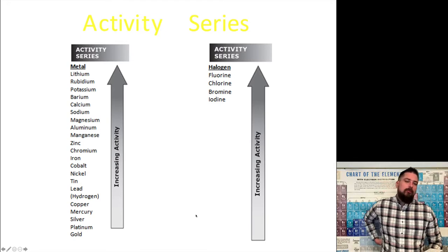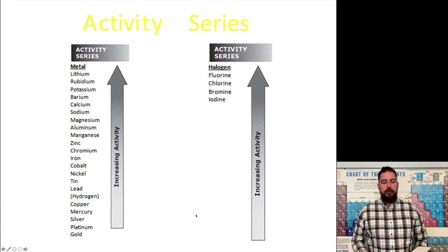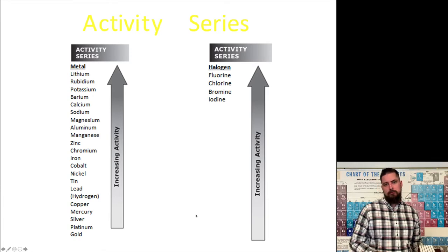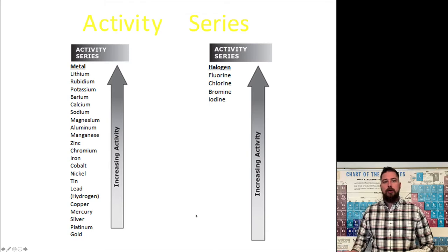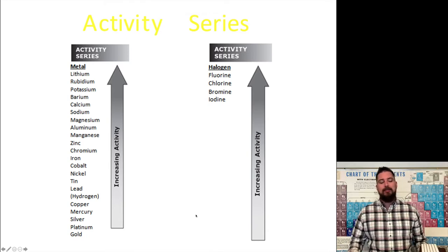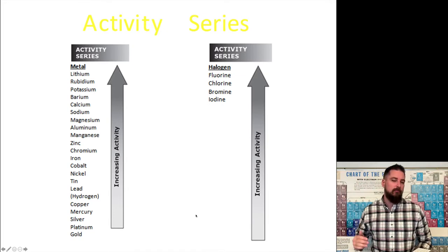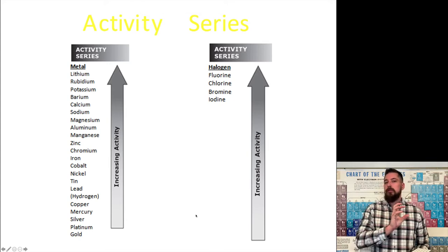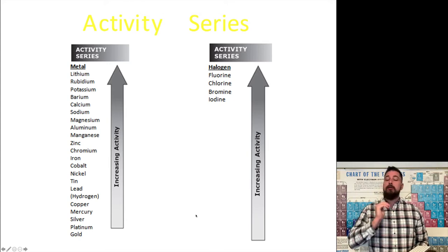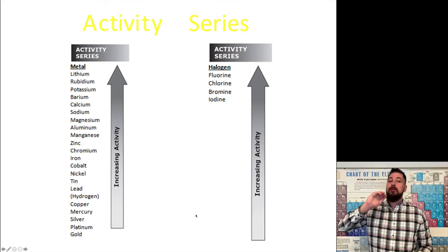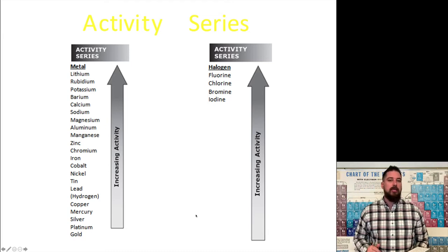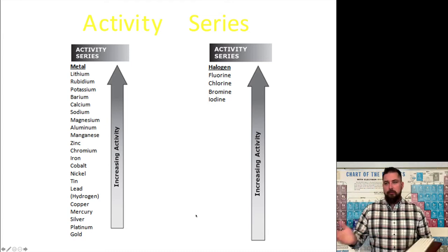So when we're thinking about a single replacement reaction, let's say we have lithium and the other compound is magnesium chloride. Notice how on the list, the lithium is higher than the magnesium. If it's higher on the activity series, the lithium will replace the magnesium, no matter what compound it's in.